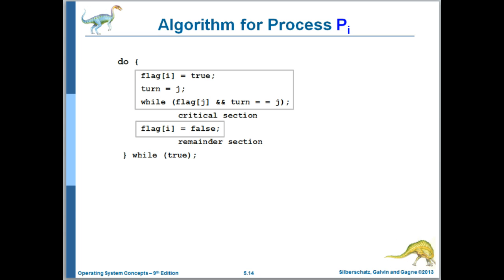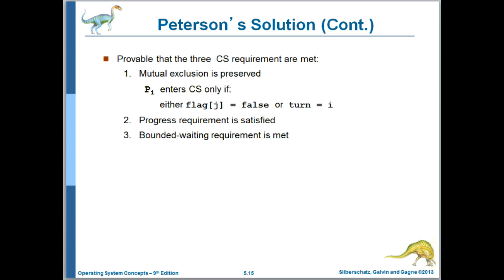Now, let's move on to bounded waiting. Let's assume that pi is waiting at the while loop there, and that process j is in its critical section. And then let's assume that process j exits its critical section, setting its flag to false, and then immediately tries to reenter the critical section. Well, it'll set turn to i, and then pj will block in the while, and when pi finally gains control of the CPU again after a context switch, it will be able to enter its critical section because now the turn is i rather than j. Alright, so we've now shown that Peterson's solution has all three requirements of a solution to the critical section problem.